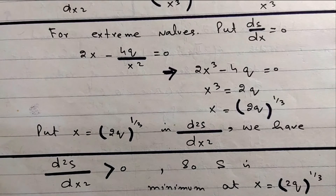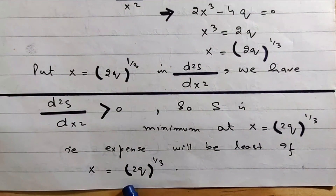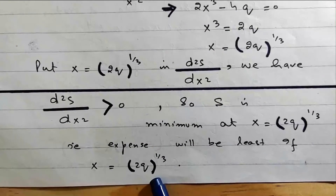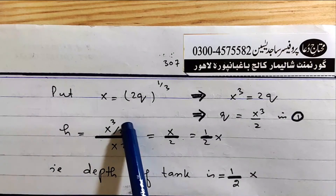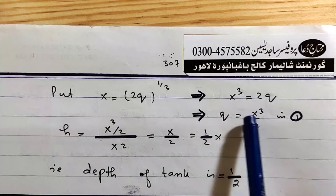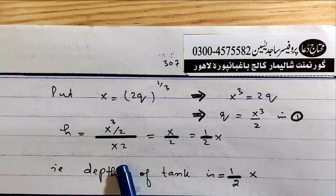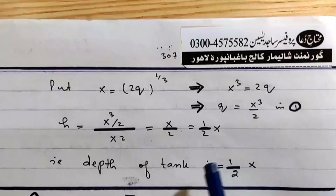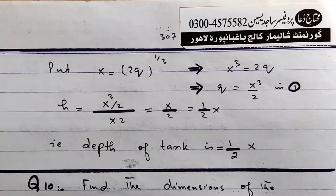Since the double derivative is positive, S is minimum at x equals (2q)^(1/3), meaning the expense will be least when x equals (2q)^(1/3). Putting x equals (2q)^(1/3) gives x cubed equals 2q, so q equals x cubed over 2. Therefore, the depth of the tank h equals 1/2 times x cubed divided by x squared, which simplifies to h equals x/2.